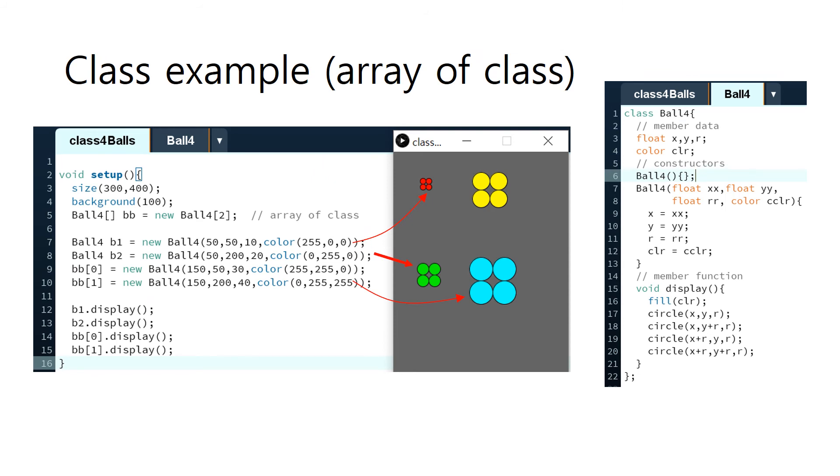Let's look at another example of using classes. Each object, in this case, is made of four circles in common. However, the location and size and the color are different. They are member data that can be initially set in the constructor. These two values are the initial location, this value is radius, and this is the color of the circle.